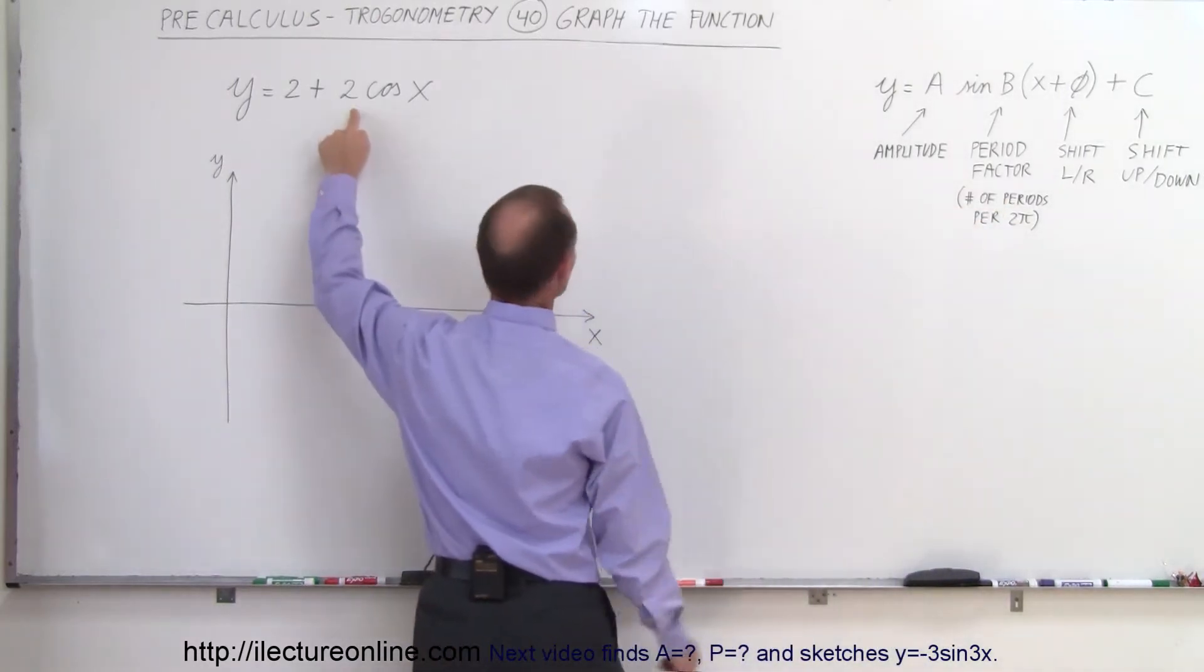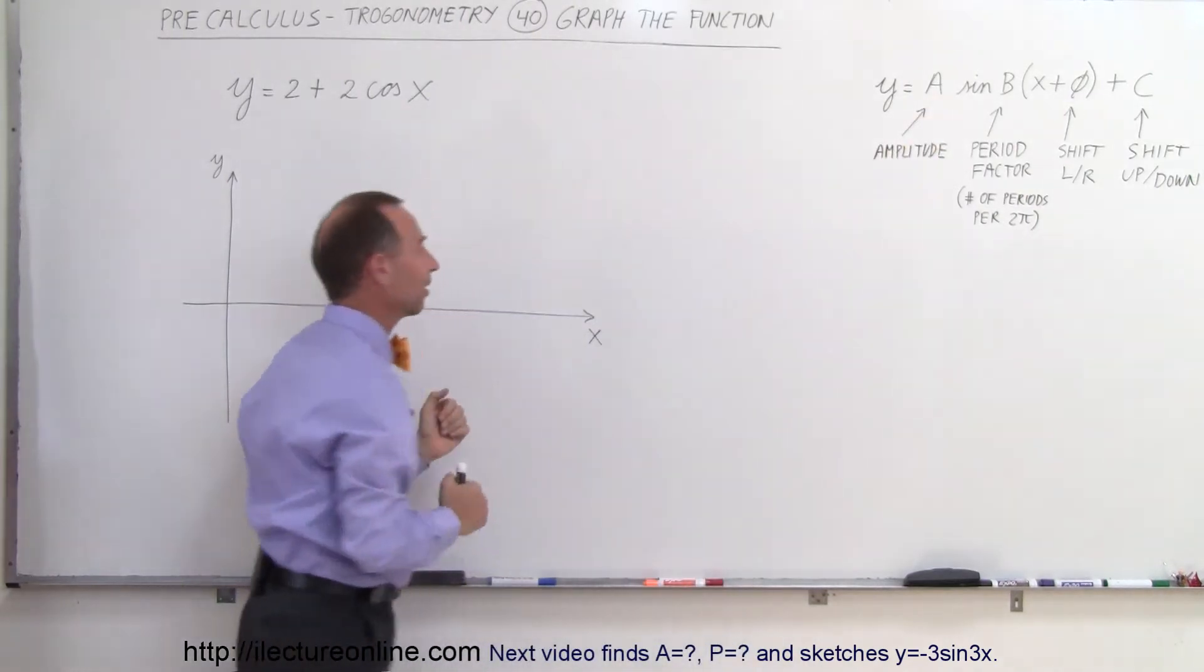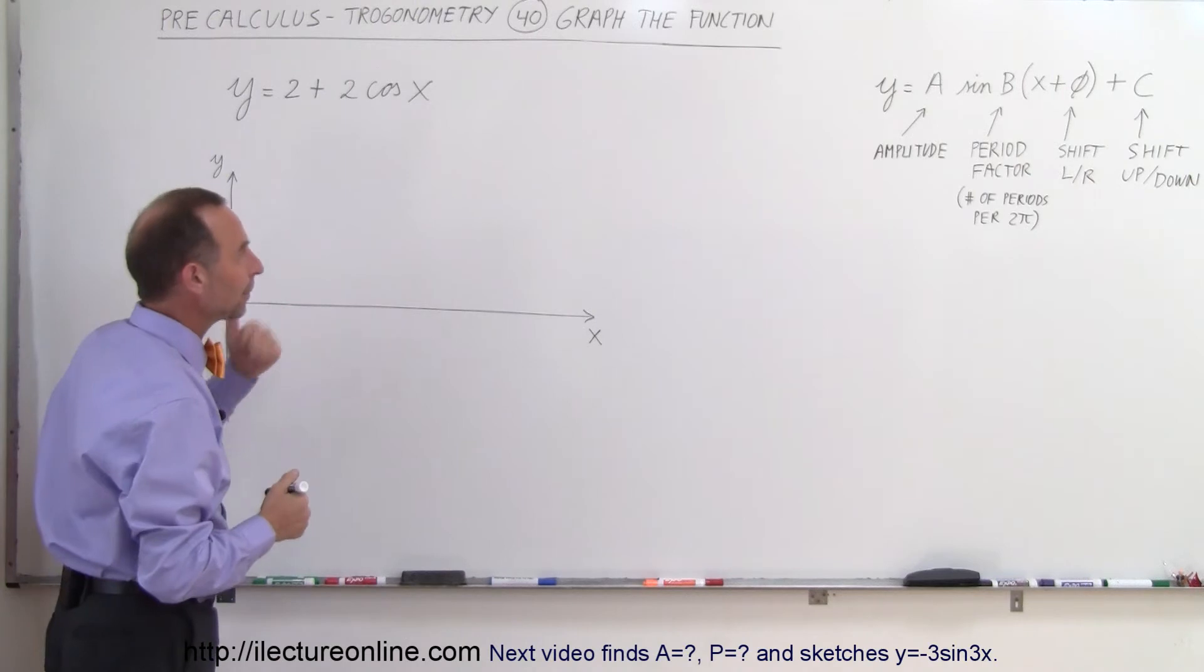And then we have 2 here which is the amplitude because it makes it twice as high. So the magnitude will be twice as big in the up and the downside.